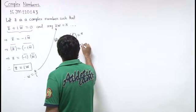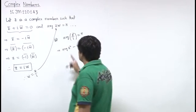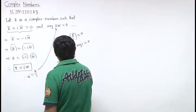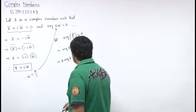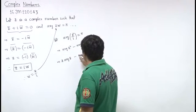Minus argument of iota. Since argument of iota is pi by 2, this becomes twice argument of z minus pi by 2 equals pi.